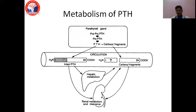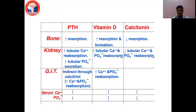Parathyroid hormone is metabolized initially by the liver through hepatic and also renal clearance. So in cases of kidney disease, we may expect higher levels of parathyroid hormone in the blood. To summarize the functions: parathyroid hormone increases calcium and decreases phosphorus; vitamin D increases both calcium and phosphorus; whereas calcitonin decreases both calcium and phosphorus in the blood. The interplay of these hormones is important for calcium homeostasis.